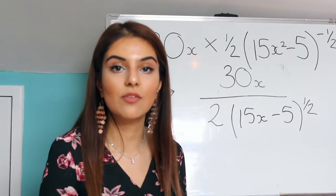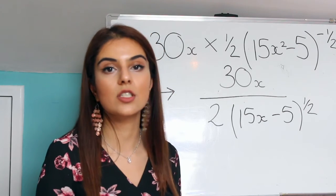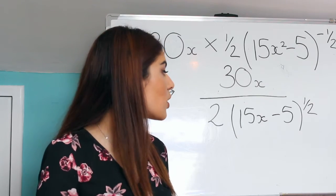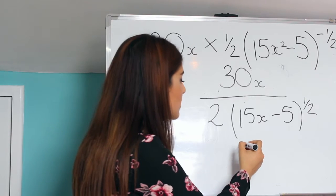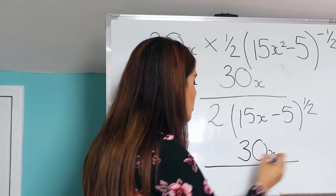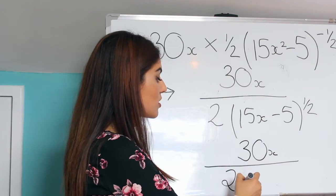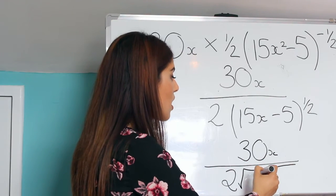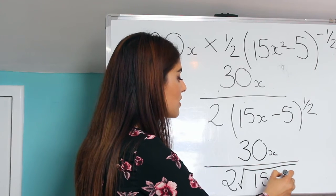And now we can neaten that up even more by turning the half into a square root. So the final answer that we would get would be 30x over 2 to the square root of 15x squared minus 5.